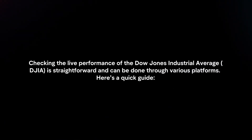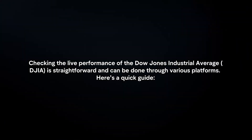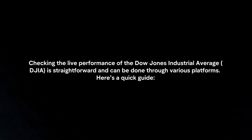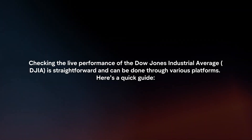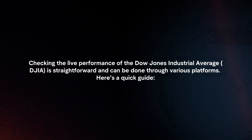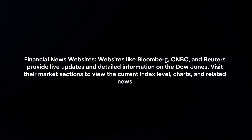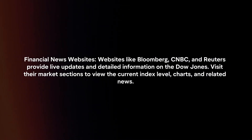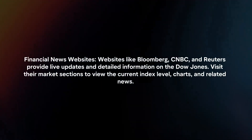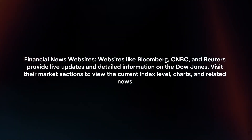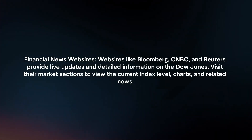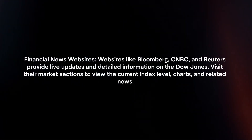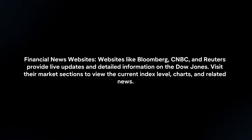Checking the live performance of the Dow Jones Industrial Average is straightforward and can be done through various platforms. Here's a quick guide. Financial news websites like Bloomberg, CNBC, and Reuters provide live updates and detailed information on the Dow Jones. Visit their market sections to view the current index level, charts, and related news.